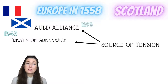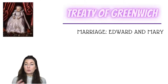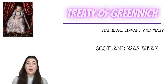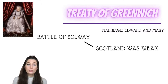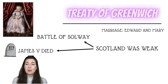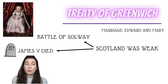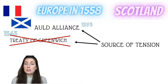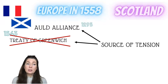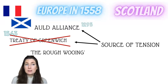Henry VIII in 1543 had signed the Treaty of Greenwich with Scotland, which negotiated the marriage between Edward his son and Mary Queen of Scots, who was very little at this point. This happened mainly because Scotland was weak — they had just lost the Battle of Solway and weren't able to bargain well with the English. In addition, James V had died soon after the battle, leaving his six-day-old daughter Mary Queen of Scots as Queen. That meant the Treaty of Greenwich wasn't something they wanted, and they very quickly repudiated — rejected — it in December 1543, renewing their alliance with France.